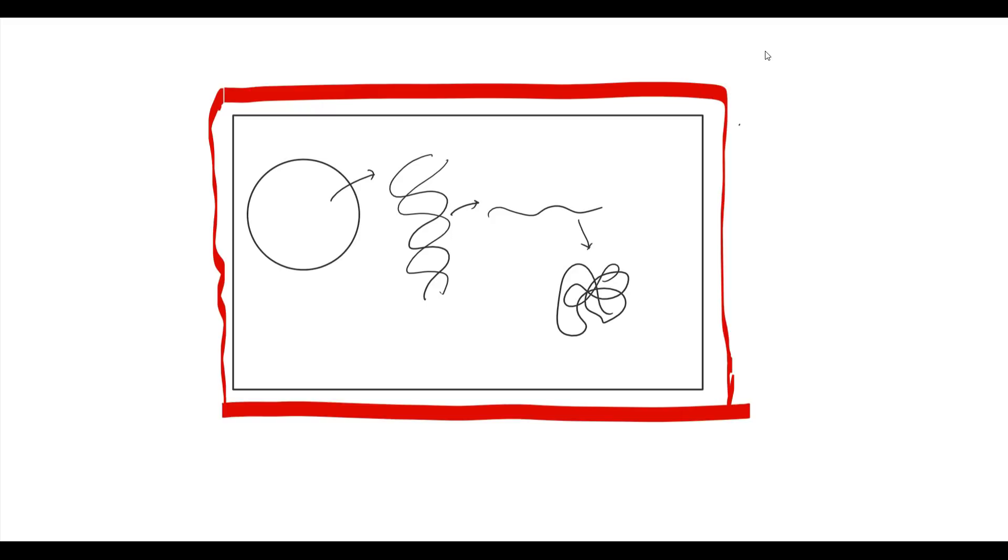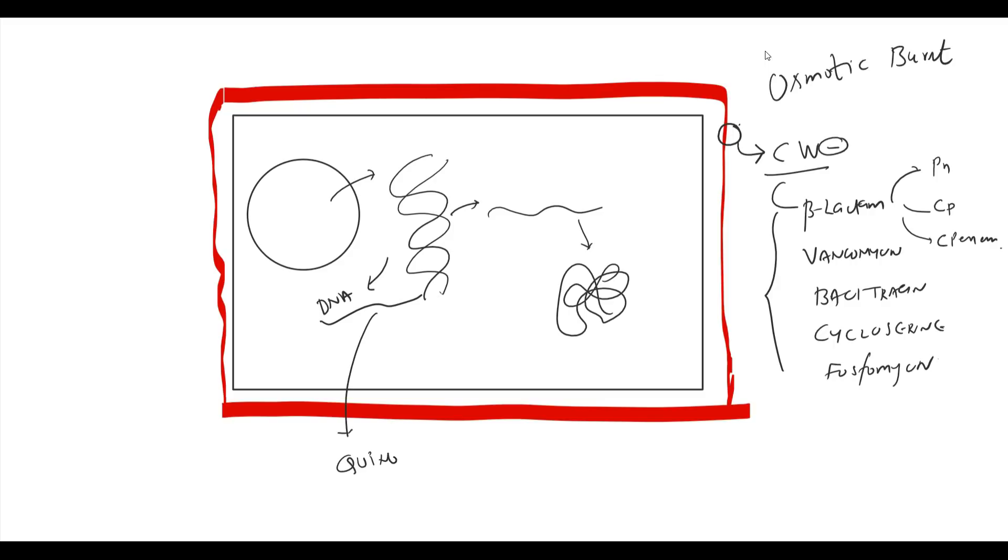Different class of antibiotics act by different mechanism. Antibiotics which block synthesis of cell wall, also known as cell wall inhibitor, constitute beta-lactam group of antibiotics which include penicillin, cephalosporin, carbapenem, vancomycin, bacitracin, cycloserine, and phosphomycin. All antibiotics prevent synthesis of new cell wall and make bacteria vulnerable to osmotic burst. Quinolones group of antibiotics interfere with DNA replication, thereby promote bacterial killing.